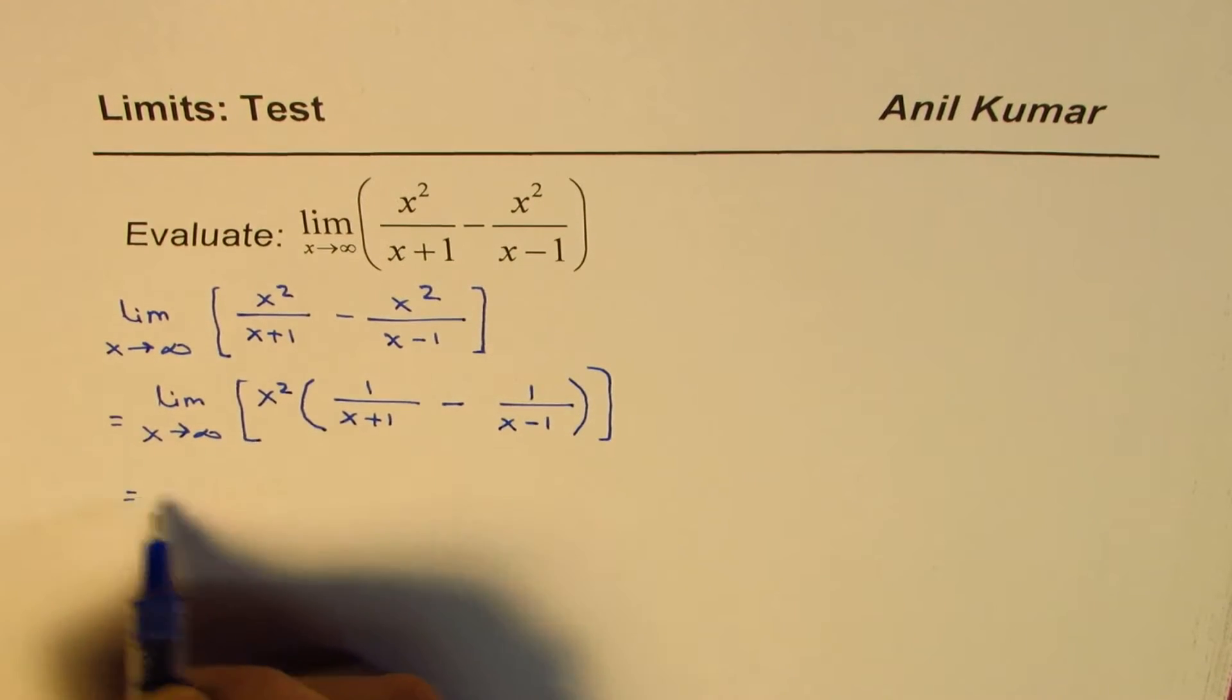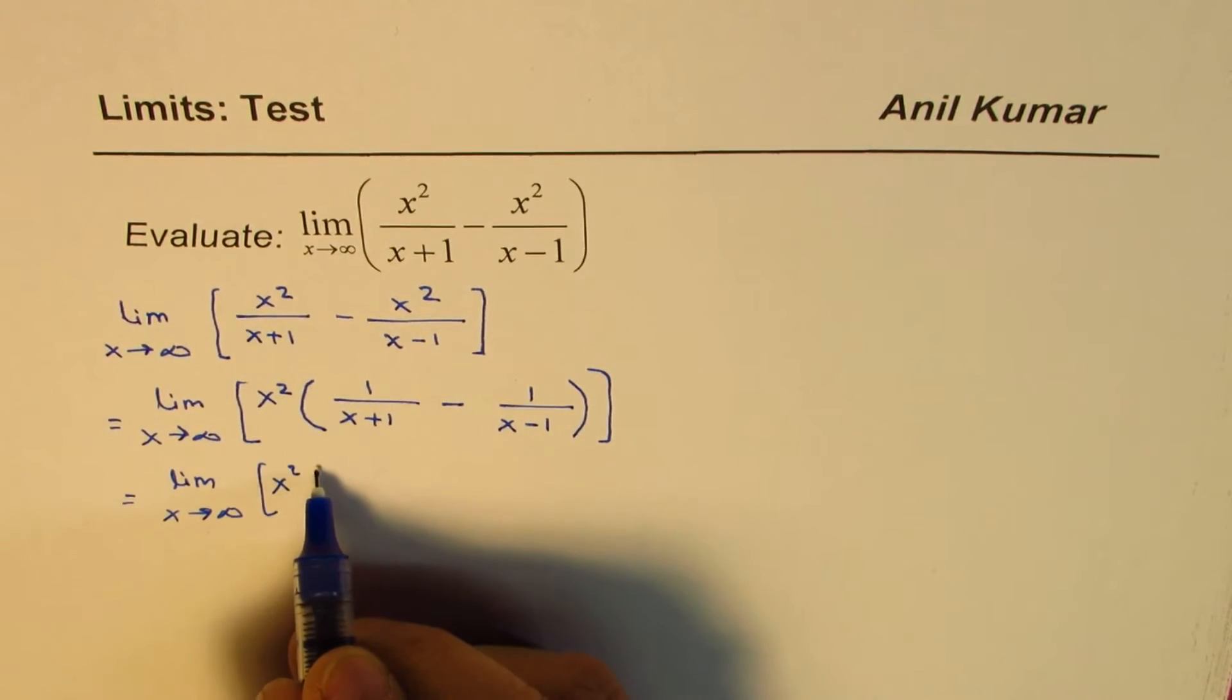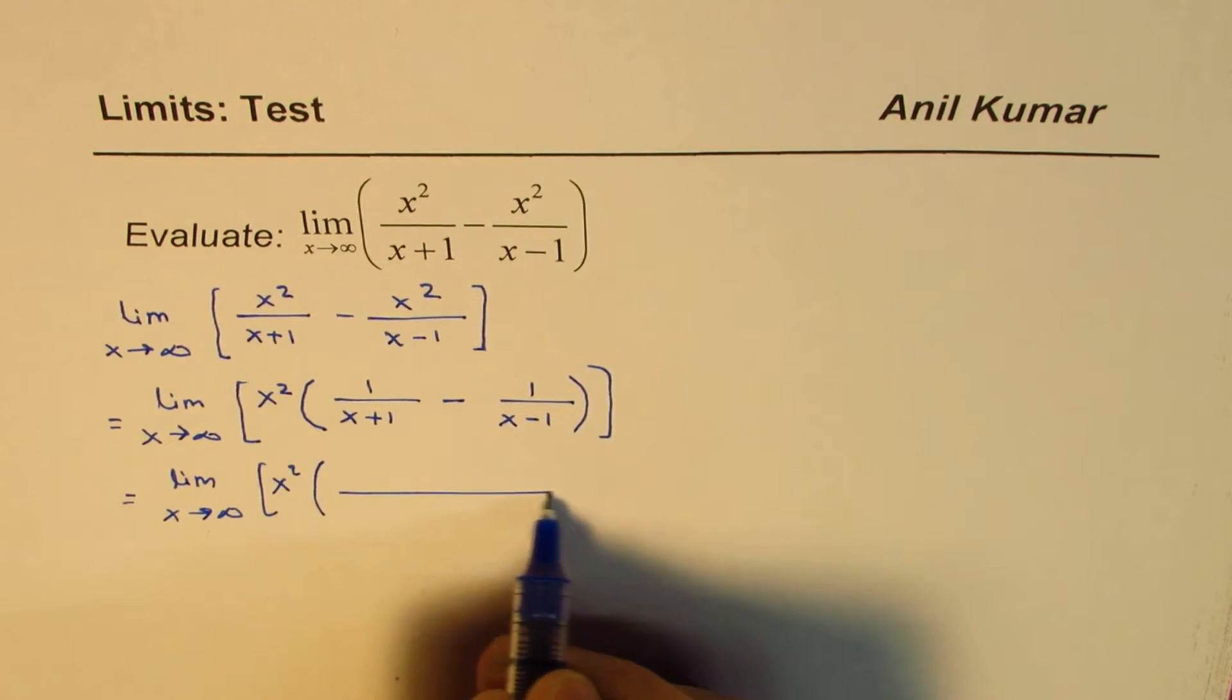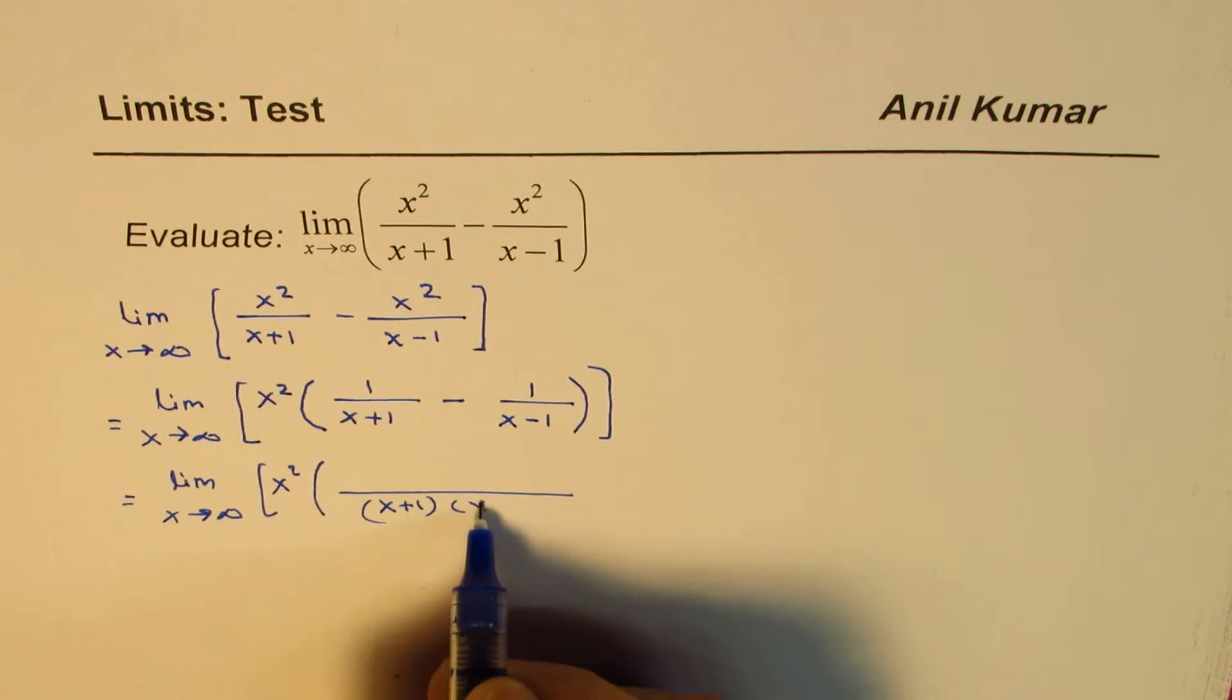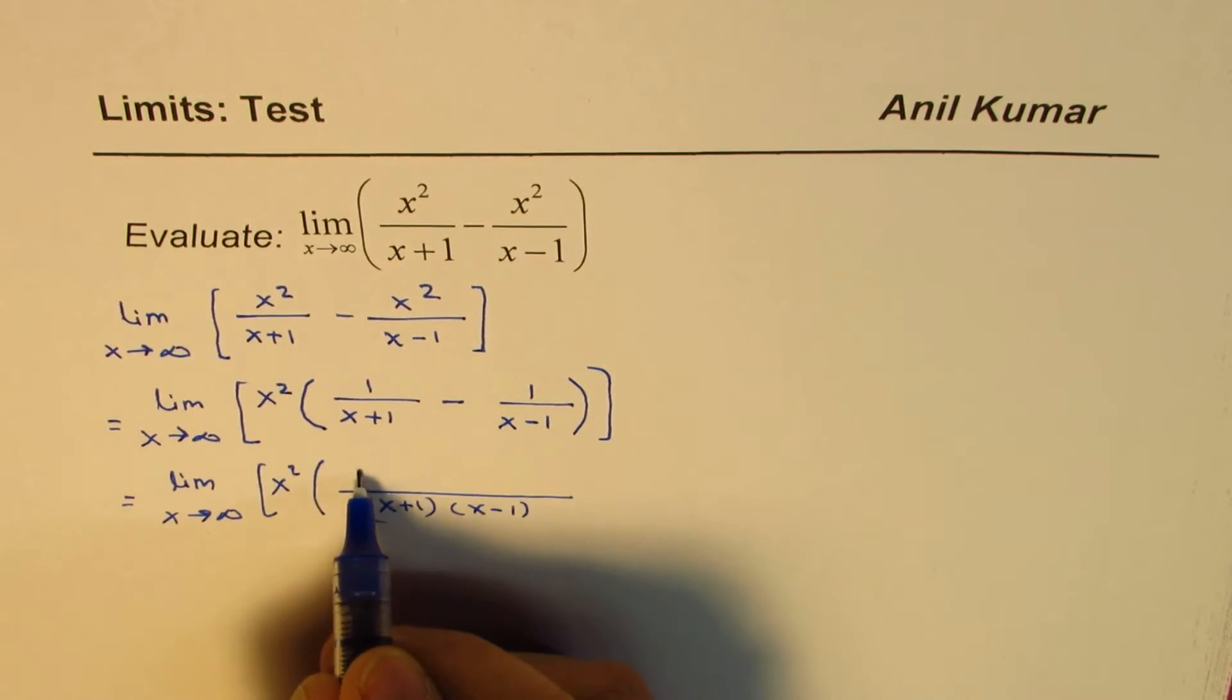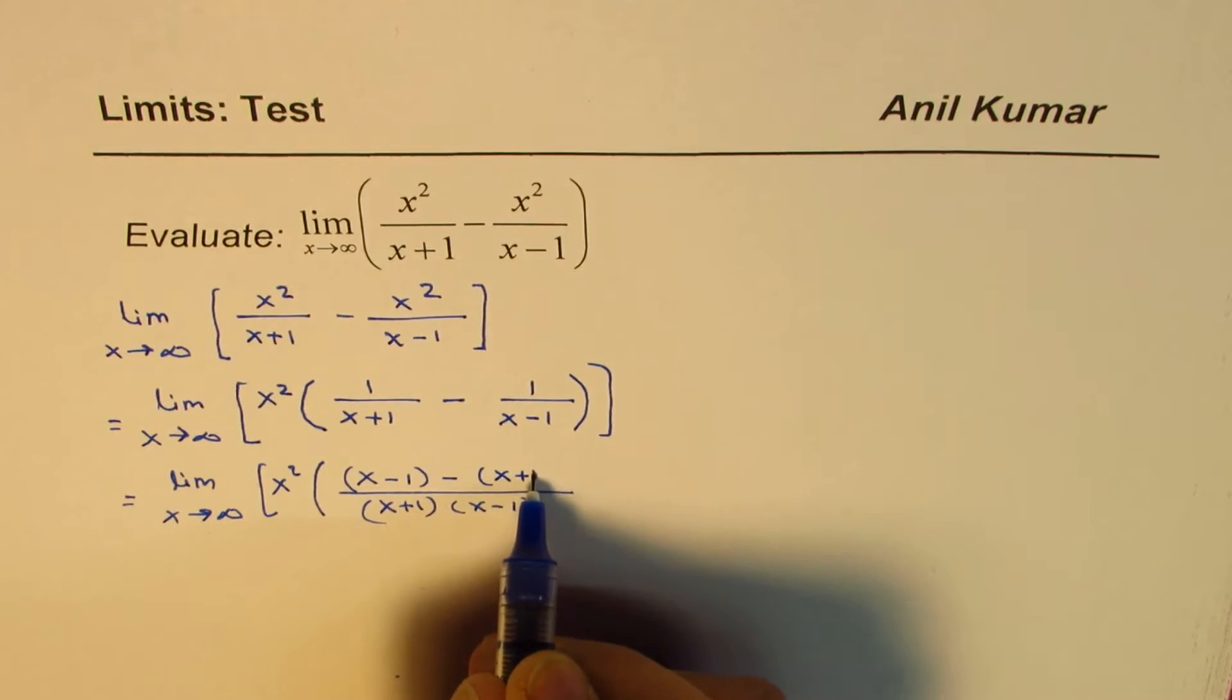Now we can take common denominator. So we have limit x approaches infinity for x squared, and the common denominator here is, you multiply these two, x plus 1 times x minus 1. Cross multiply, we have x minus 1 minus x plus 1.